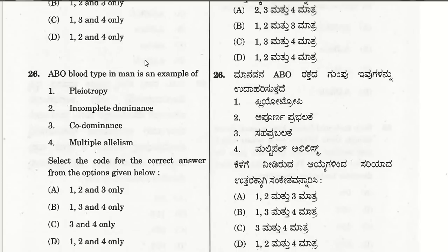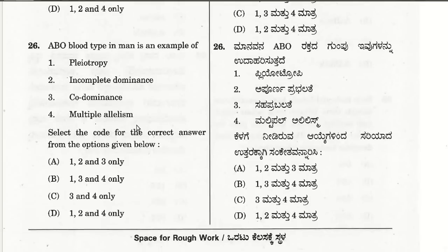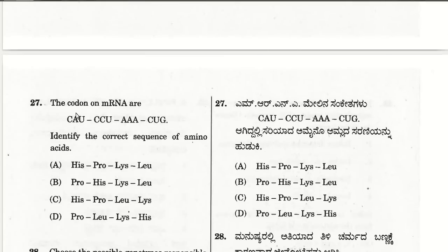ABO blood type in man is an example of co-dominance, where both alleles are expressed together when present. The correct answer includes 3 and 4 only — co-dominance and multiple allelism are both right answers for this question.